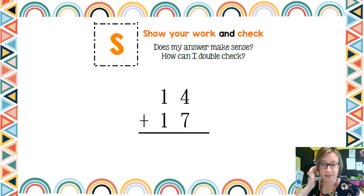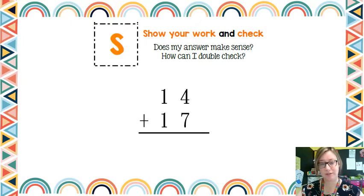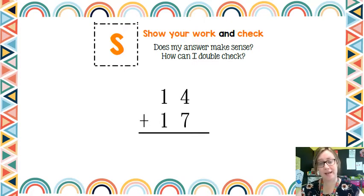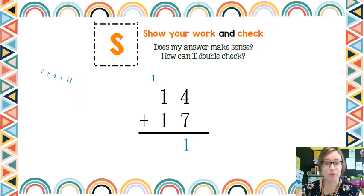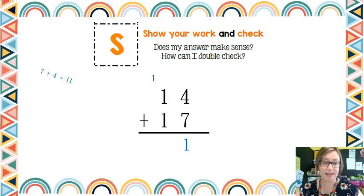The S stands for show your work and check. We've got our sum written out as an algorithm so that it's easier to work out using place value. We're adding 14 and 17. The first thing we do is start with the ones column: we add seven and four, which is 11. We put the one from the ones column down and carry the one to the tens column. Then in the tens column, we have one plus one plus one, which equals three. So our answer is 31.